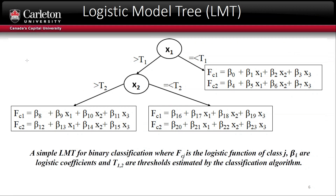For example, if we have a binary classification problem and for simplification, let's assume that the logistic model tree selected only three features — x1, x2, and x3. The constructed model could look like this, which is very explainable. During training, the logistic model tree tries to find the best threshold to separate the tree and the best weights — beta 0 to beta 23 — which are the weights of the features.